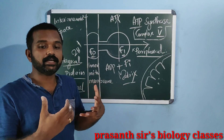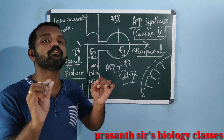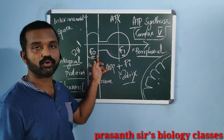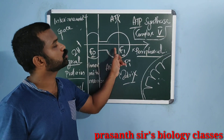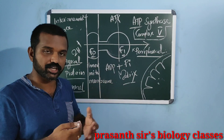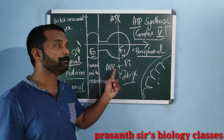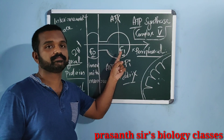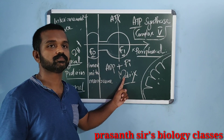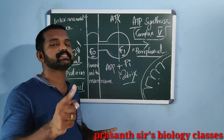When the proton gradient breaks — that is, when facilitated diffusion of protons occurs from intermembrane space to matrix through F0, the proton channel — the protons passing through the F1 part bring a conformational change in F1, and the enzyme gets activated. As a result, ADP and inorganic phosphate present in the matrix combine to form ATP. The catalytic part of F1 has the active site for binding of adenosine diphosphate and inorganic phosphate. For every 2H+ transported from intermembrane space to matrix, 1 ATP is synthesized.